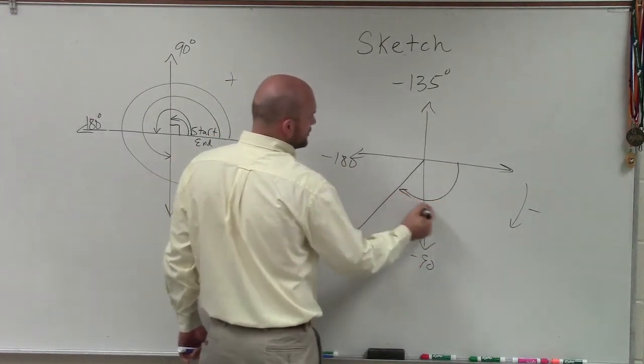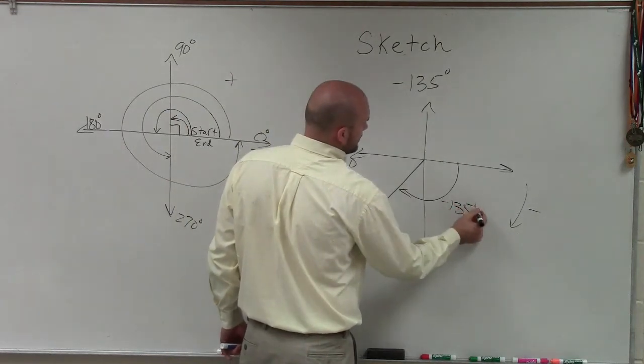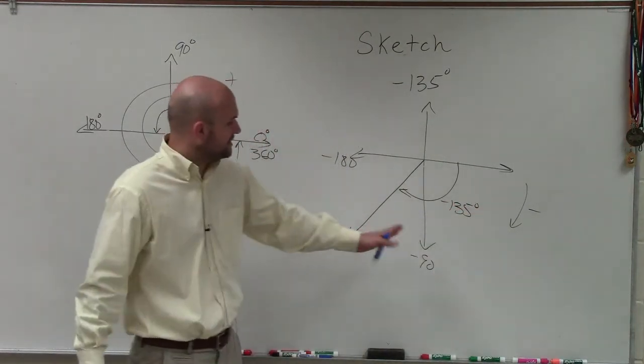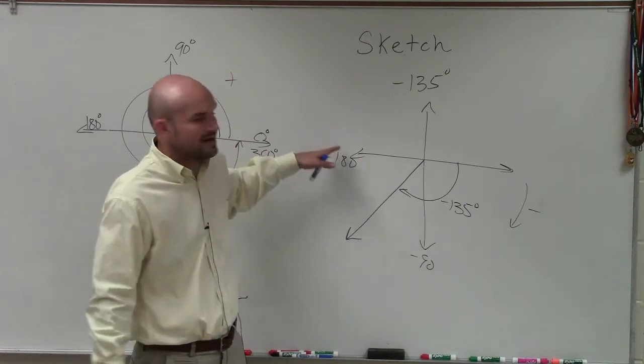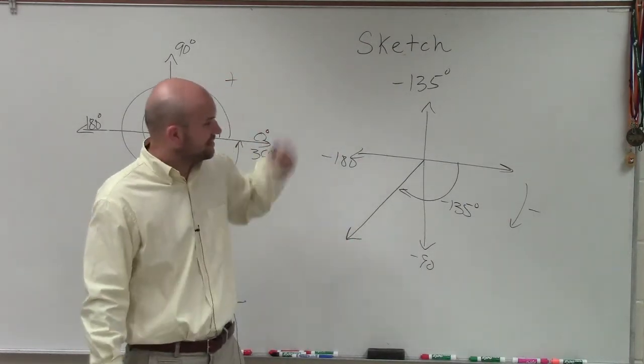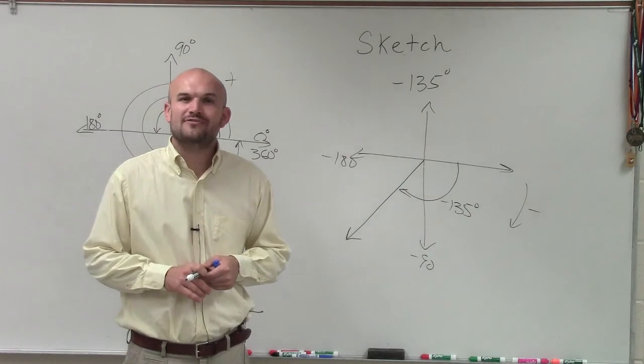So my angle for negative 135 degrees is going to be in that direction and halfway between 90 and 180 in the negative direction. So there you go, ladies and gentlemen. That's how you sketch negative 135. Thanks.